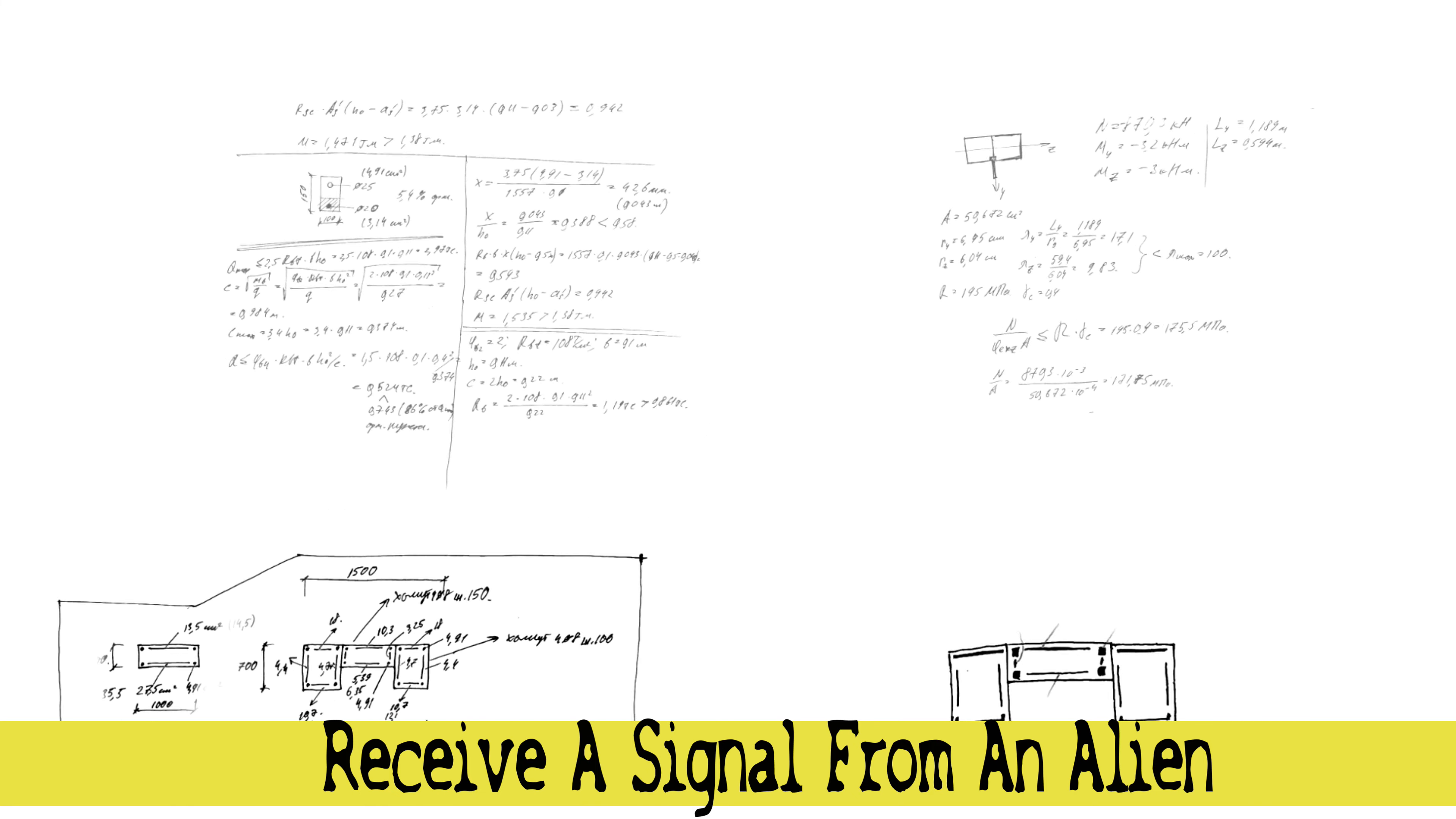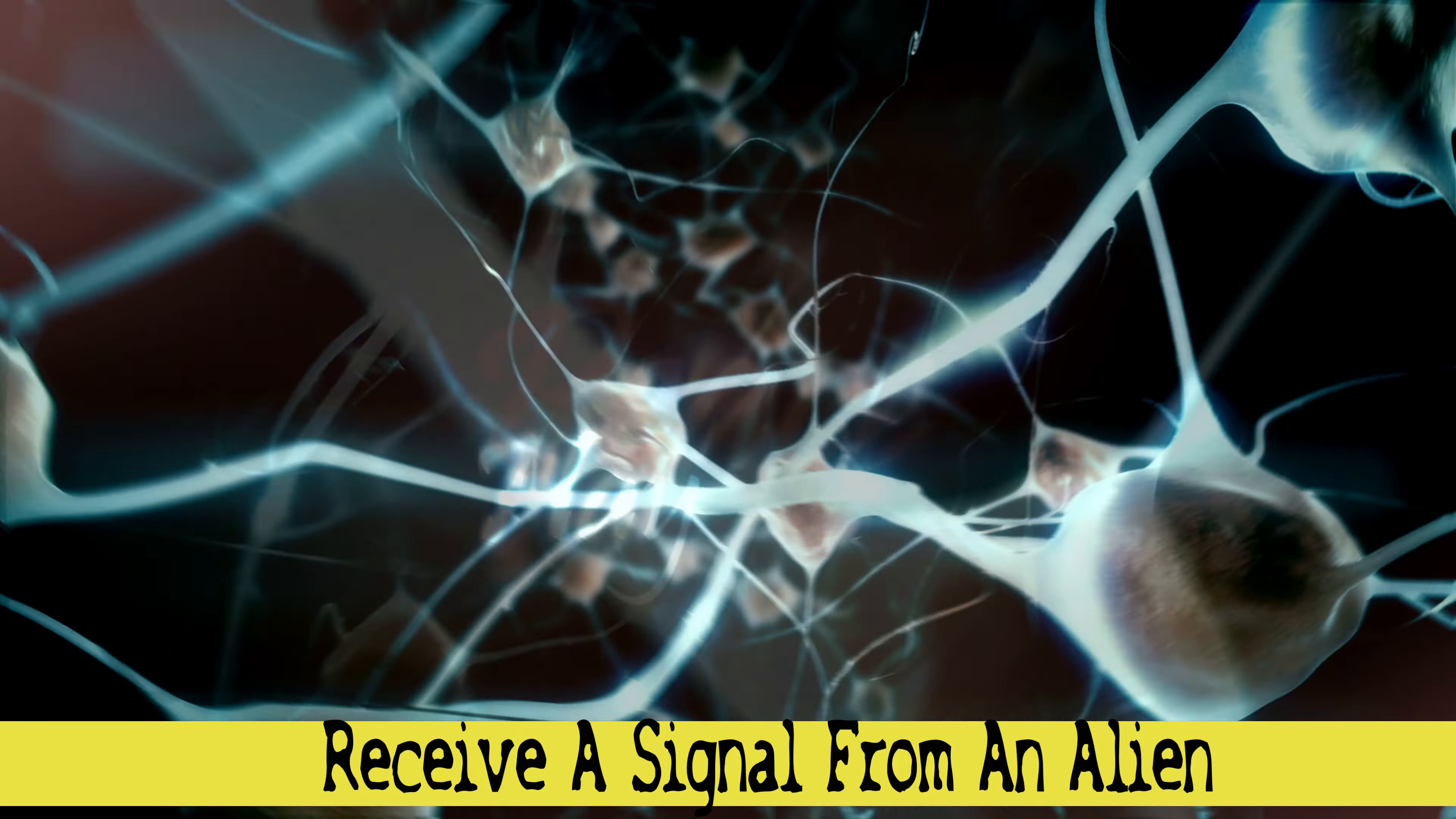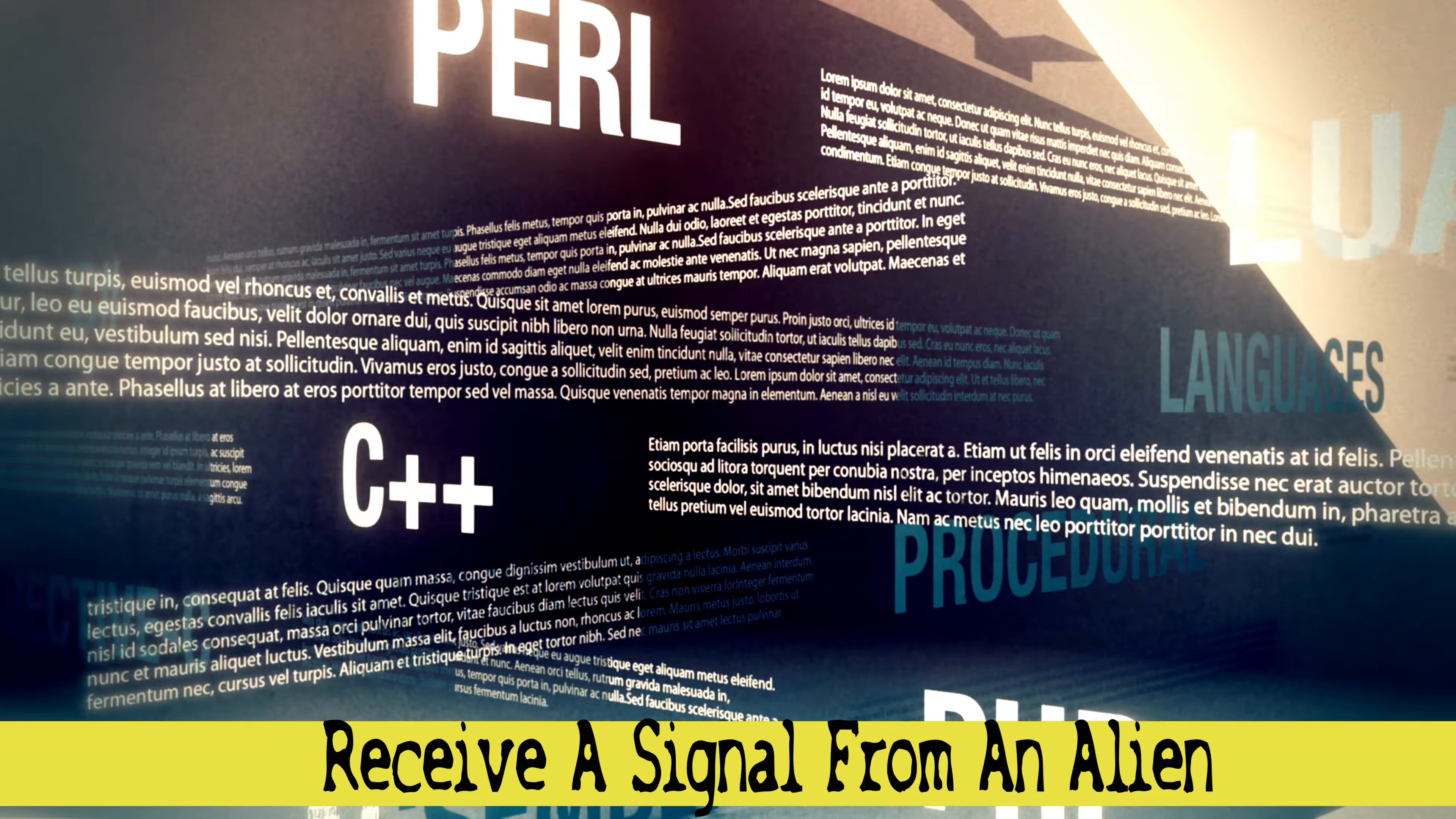Linguists also propose that all languages must have a way of indicating the context and the intention of the speaker, such as time, place, mood, and purpose, and a way of signaling the feedback and the understanding of the listener, such as questions, answers, confirmations, corrections. These signals are crucial for any communication system that aims to establish and maintain a dialogue between interlocutors.